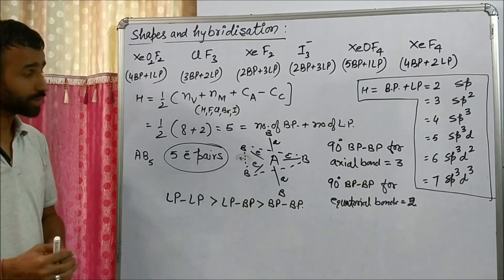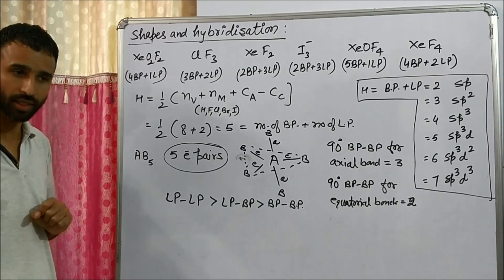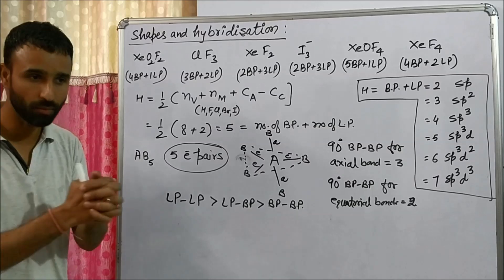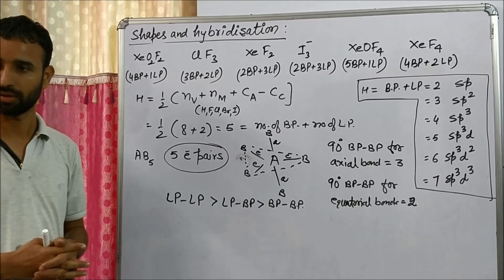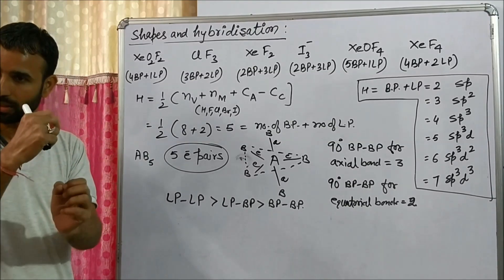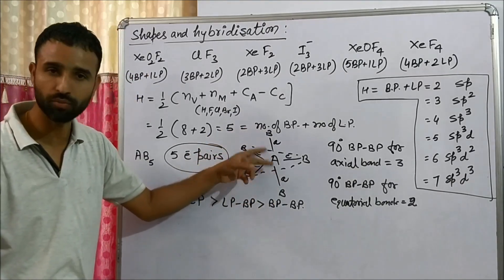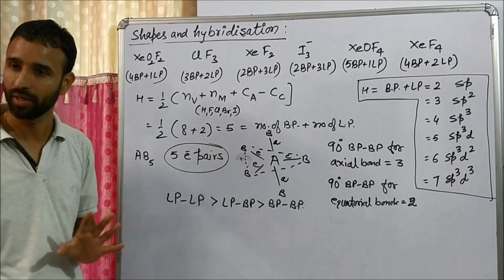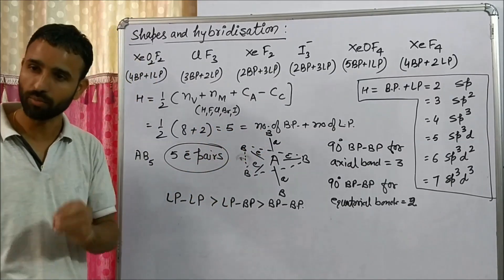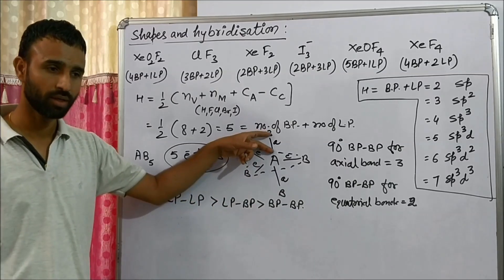Oxygen forms a double bond and fluorine forms a single bond. Out of double and single bonds, the double bond repels more, because it has two pairs of electrons. Axial positions are always occupied by bond pairs. But if there is an option between a double bond and a single bond, the double bond should be at the equatorial position, and the single bond also at equatorial — so we have two double bonds and two single bonds to arrange.